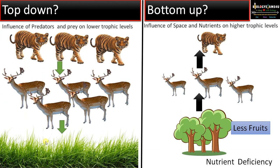Now there are two types of trophic cascade. The first one is top-down trophic cascade and the second one is bottom-up trophic cascade. In top-down, as we have discussed, the predator actually controls the prey population, causing an effect at lower trophic levels. This influence of predator and prey on lower trophic levels is called the top-down trophic cascade.